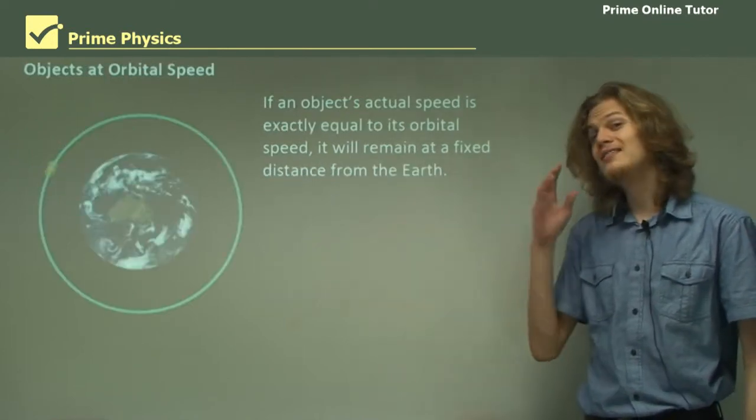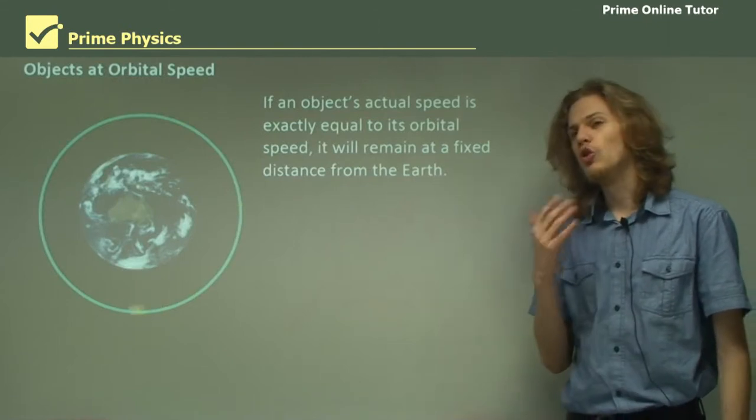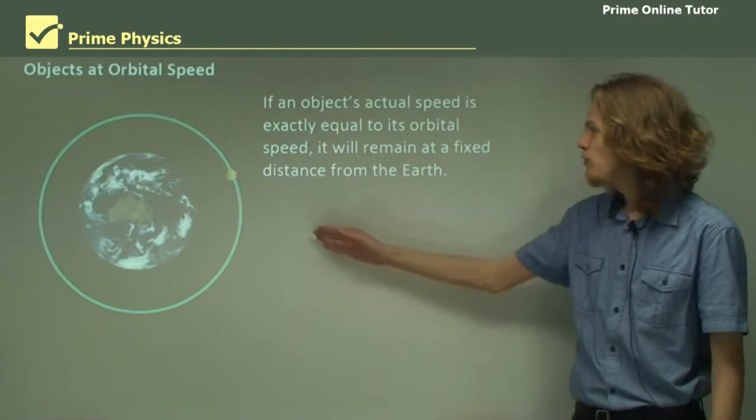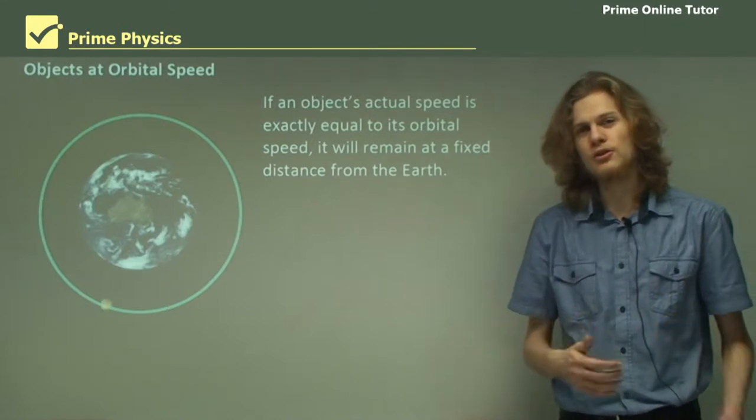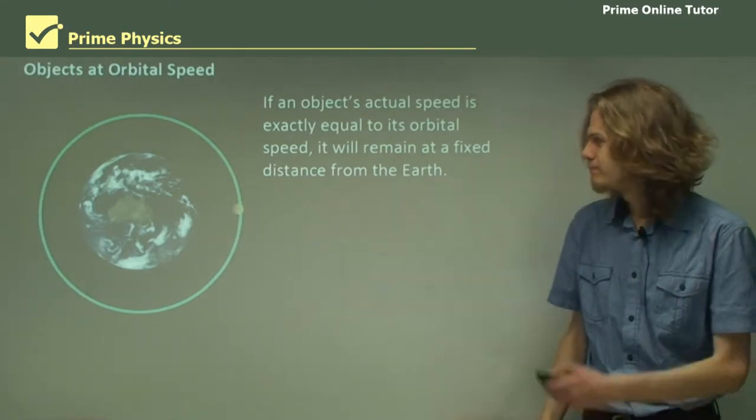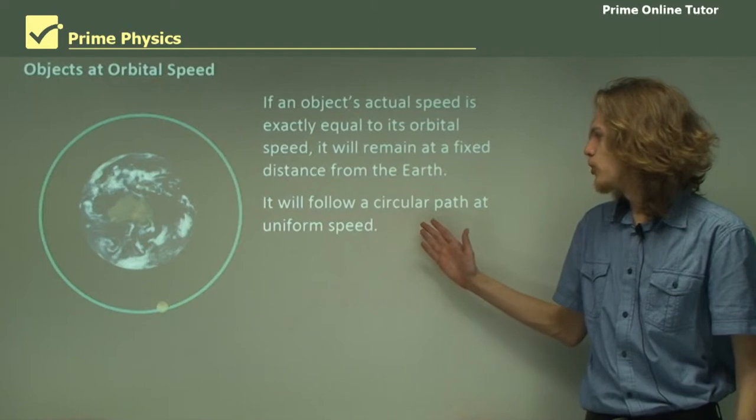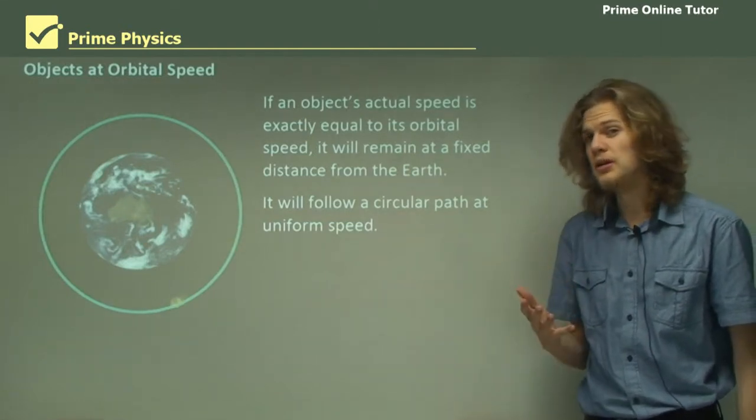Now if an object's actual speed is exactly equal to its orbital speed then it will move in a perfect circle. It will remain a fixed distance from Earth instead of changing. So it will follow a circular path at a uniform speed.